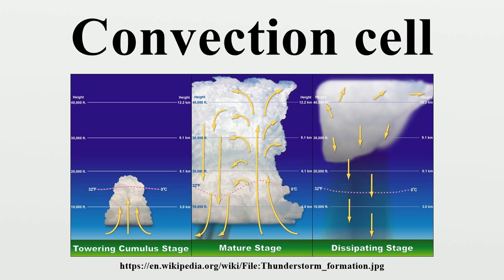Convection cells can form in any fluid, including the earth's atmosphere, boiling water, soup, the ocean, or the surface of the sun. The size of convection cells is largely determined by the fluid's properties. Convection cells can even occur when the heating of a fluid is uniform.